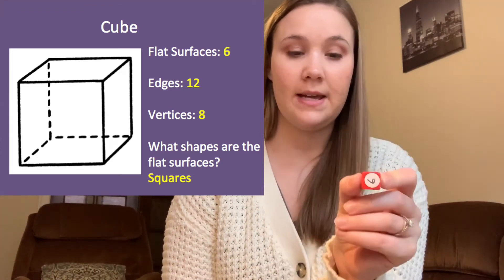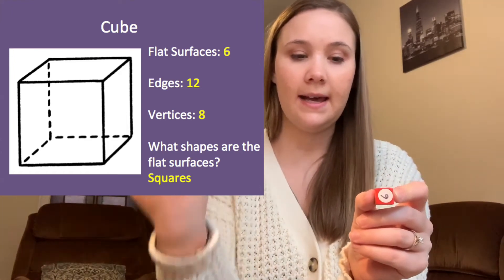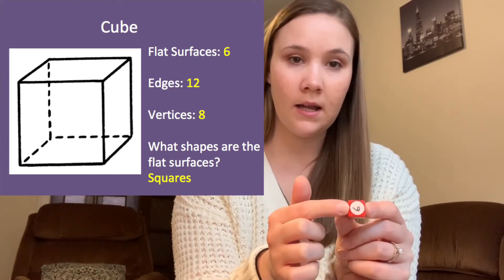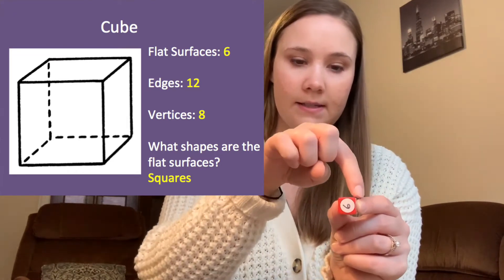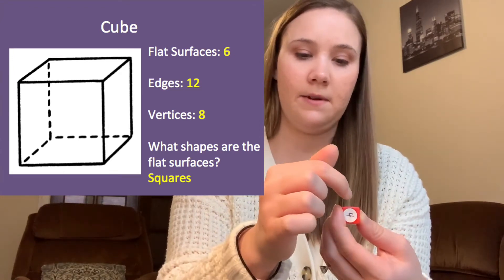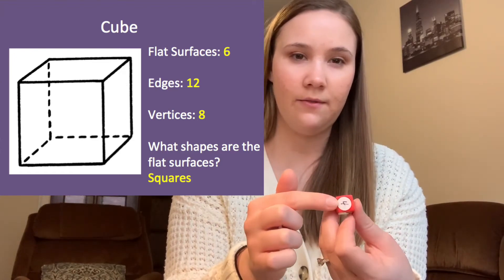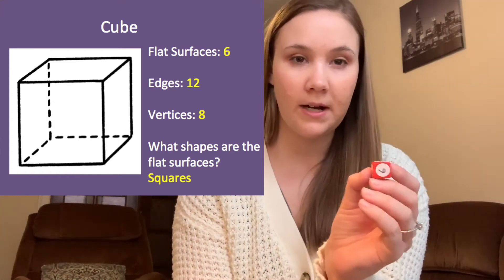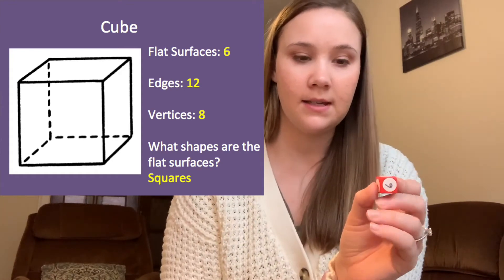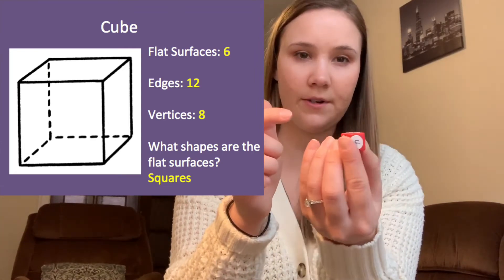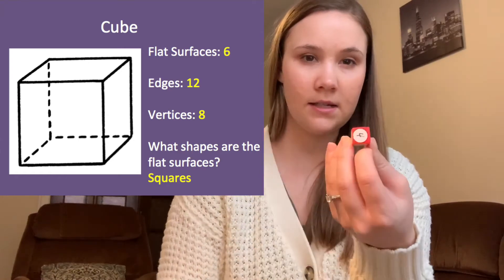Now let's count the edges, making sure we don't count any twice. Starting from the front: one, two, three, four. Then the top: five, six. The bottom: seven, eight. Flipping it around to the back: nine, ten, eleven, twelve — so there are twelve edges on a cube. Now the vertices — the corners where edges meet. Front: one, two, three, four. Spinning it around: five, six, seven, eight — so there are eight vertices.